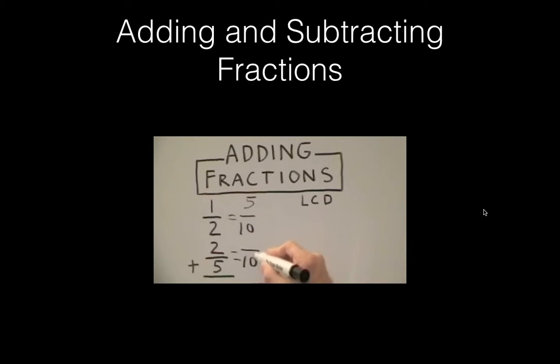On the bottom, we take 10, divide it by 5 to get 2. Take that 2, multiply it by 2 to get 4. And that will be our numerator for the bottom fraction. Now all we do is add our numerators together to get 9/10, which is our final answer since it cannot be reduced any further.